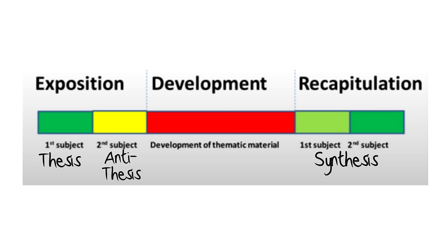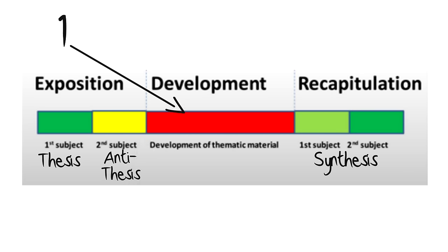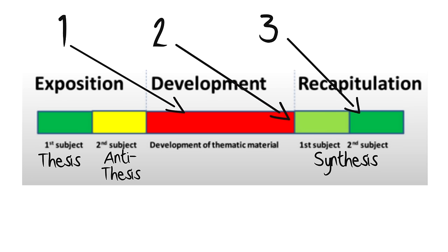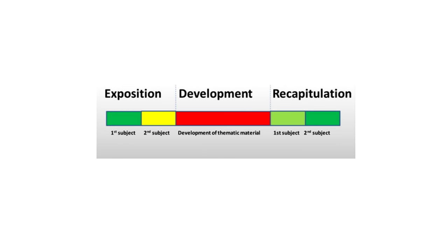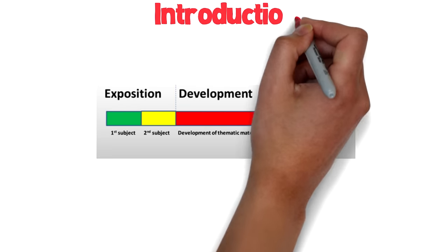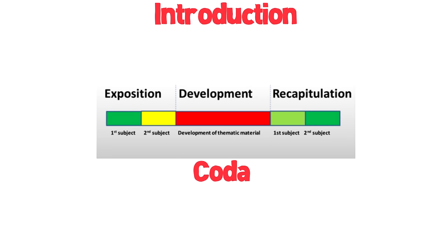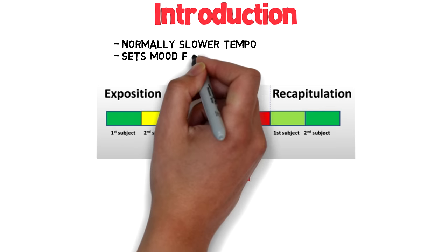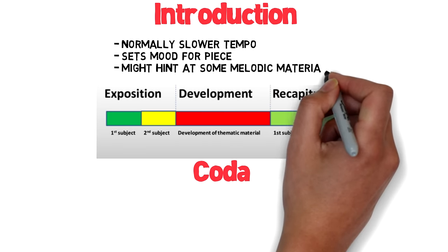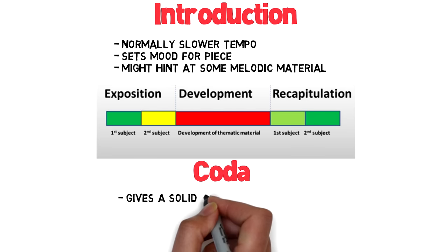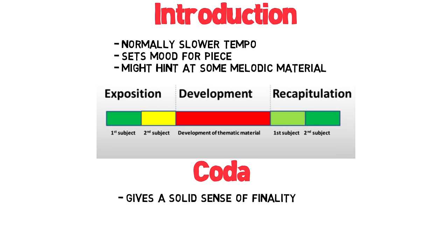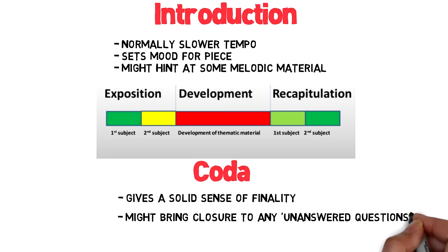Sonata form is a great model for building dramatically engaging pieces of music. In my opinion, the three most exciting points where composers get the opportunity to blow your mind are: the development section, the return from the development into the recapitulation, and the second group of the recapitulation. This is the fundamental sonata form structure, though it is often topped and tailed with an introduction and a coda. The introduction is normally at a slower tempo, and its job is to set the mood for the piece, as well as perhaps hint at some of the melodic material. The coda gives a solid sense of finality to the piece, and might also bring closure to any unanswered questions we might still have about the music.